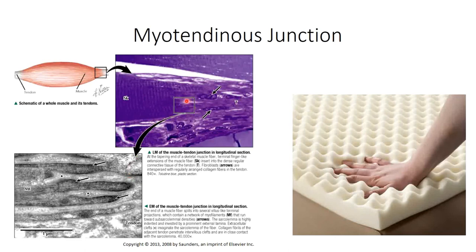The interface is further reinforced by the presence of anchoring proteins, such as vinculin and fibronectin. Despite this reinforcement, the interface surface represents a weak point in the muscle-tendon-bone interface, and the most likely location of tearing with muscle strains or pulls.